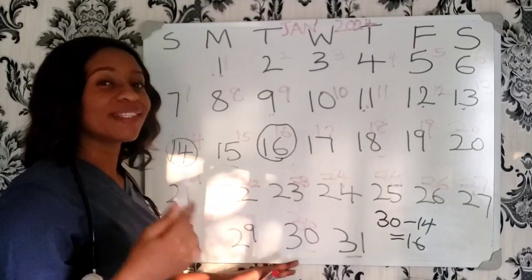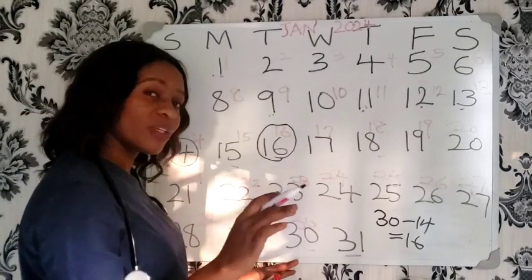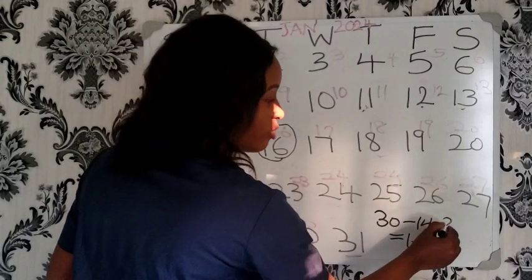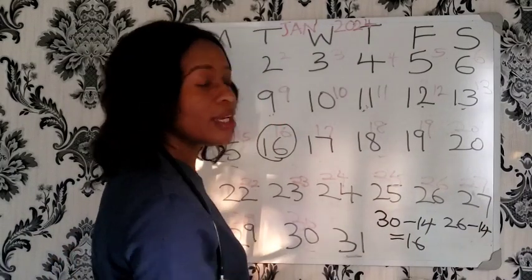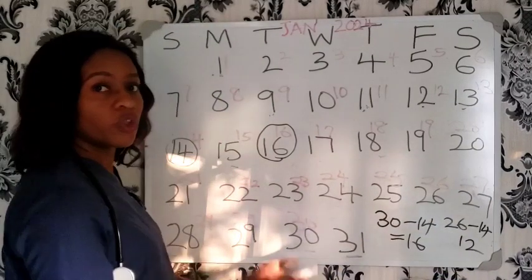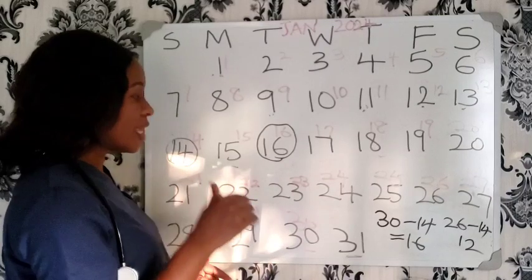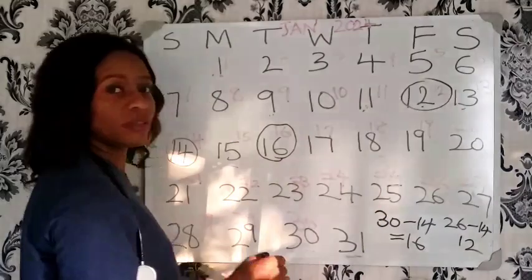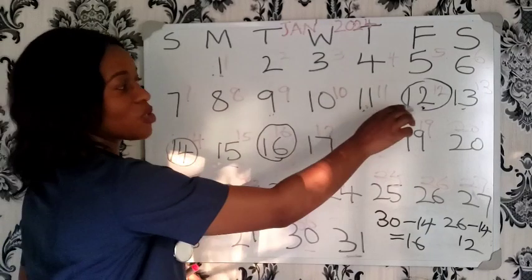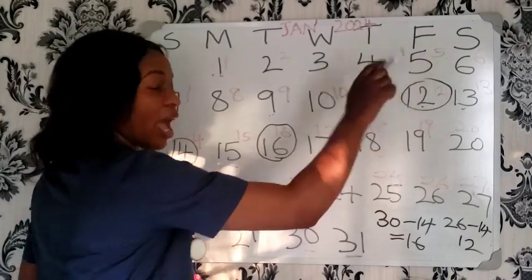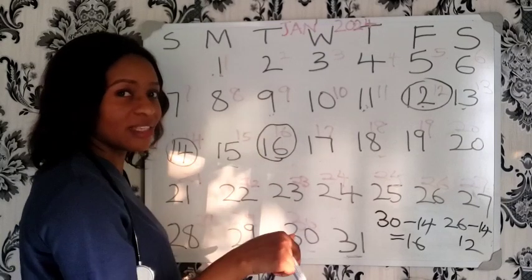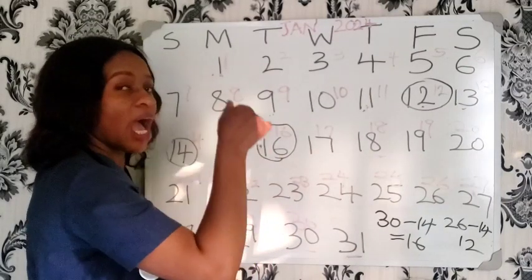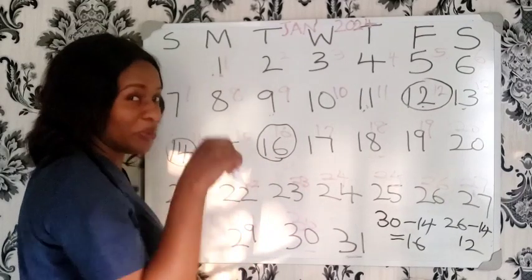For a woman with a 26-day menstrual cycle, subtract 14 from 26 and you get 12 — so she ovulates on day 12. Five days leading to the ovulation day and a day after are her fertile days. Days before the fertile days begin, and days after the fertile days end, are her safe period.